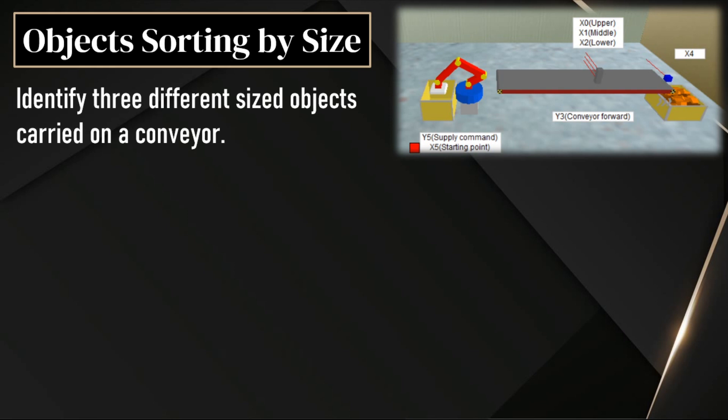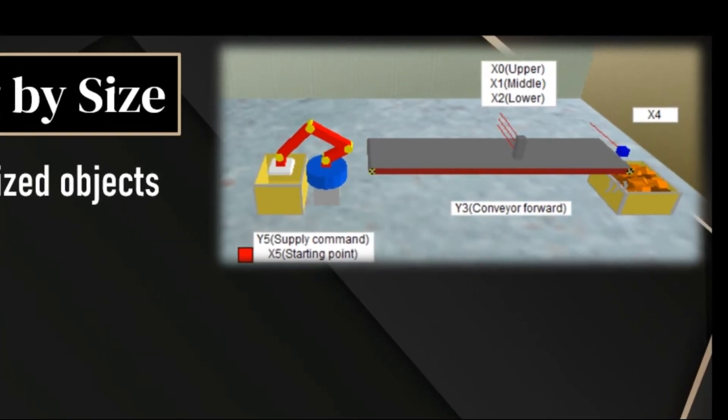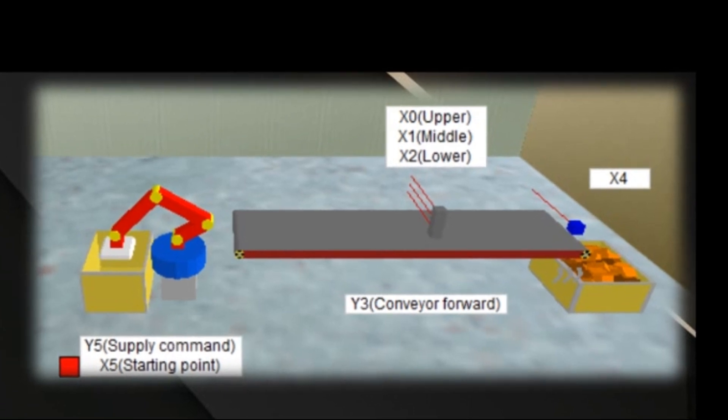In this video, we have an interesting example. We have three different types of objects by size: small size, medium size, and large size. In this program, we have to identify the box size using the sensors.